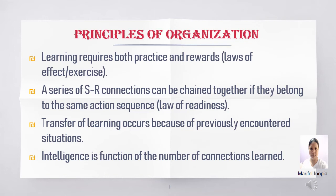Second, a series of stimulus-response connections can be chained together if they belong to the same action sequence, based on the law of readiness. The law of readiness states that learning can only take place when a student is ready to learn; when students feel ready, they learn more effectively and with greater satisfaction. Third, transfer of learning occurs because of previously encountered situations — transfer of learning occurs when people apply information, strategies, and skills they have learned to a new situation or context. Transfer is not a discrete activity but rather an integral part of the learning process. Fourth, intelligence is a function of the number of connections learned.